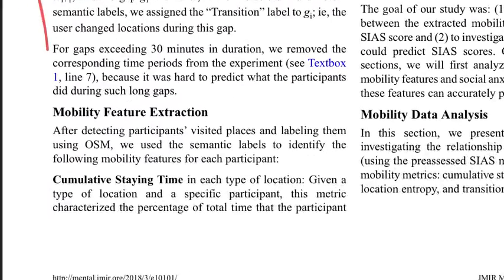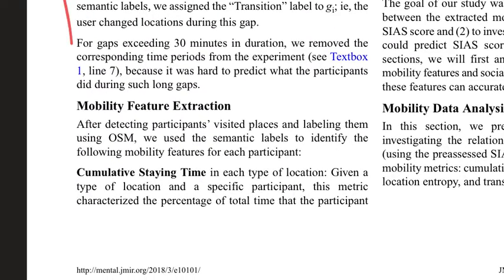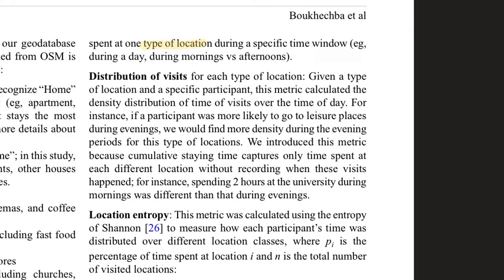The first category of features is cumulative staying time, which indicates the percentage of total time an individual spent in one type of location during a specific time window, such as mornings, afternoons, or during the day.